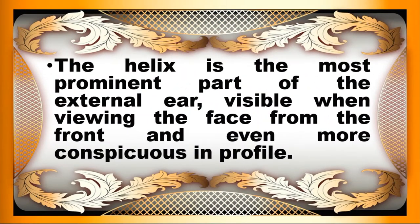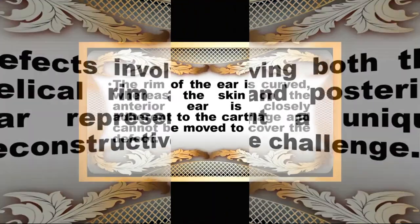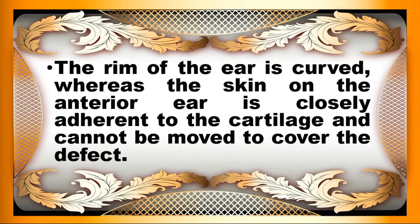The helix is the most prominent part of the external ear, visible when viewing the face from the front, and even more conspicuous in profile. Defects involving both the helical rim and posterior ear represent a unique reconstructive challenge. The rim of the ear is curved, whereas the skin on the anterior ear is closely adherent to the cartilage and cannot be moved to cover the defect.